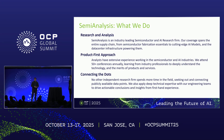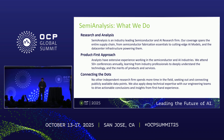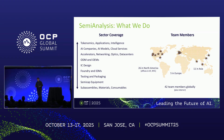We obviously do research analysis. We take a product-first approach — very technical. Most of our team is from the industry, and we blend that with ex-investors, hedge fund, buy-side people, a couple of sell-side people as well. We work across the entire stack, from sub-assemblies, materials, semi-cap equipment, testing, packaging, all the way to tokenomics. We have 11 people in Asia, 26 in North America, five in Europe, and we're 42 and growing.